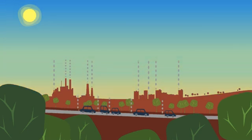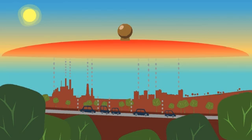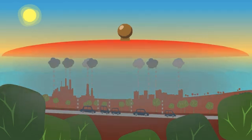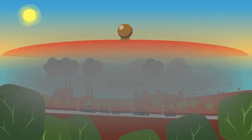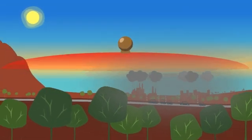Thermal inversions, which occur most often in winter, change all this. Imagine a big lid of warm air placed over the city. So now the air trapped near the surface is cooler than the air higher up. Since cold air doesn't rise, the pollutants become trapped under the lid, just like in a pot. When this happens, it can be warmer up on the mountain than it is in the city.